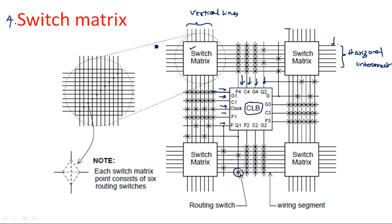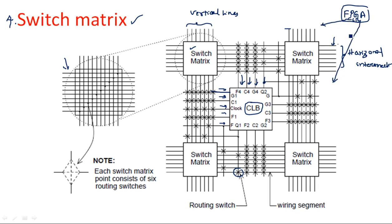Our concept here is the switch matrix. If you look at the switch matrix alone drawn separately, its internal structure will be like this. Taking the FPGA diagram, we have CLBs. If you take a CLB separately, this is the diagram — a CLB surrounded by the switch matrix and interconnects. If you then take the switch matrix separately from the CLB, this will be the internal structure.